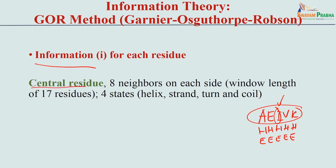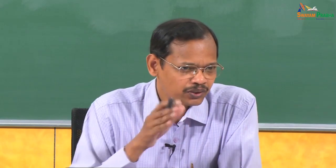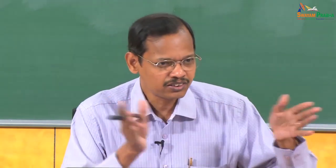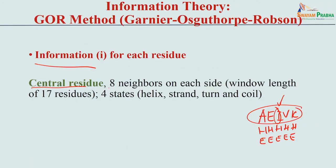Garnier used 8 neighbors on each side of the central residue. The number of neighboring residues depends on window length — you can test window lengths of 3, 5, 7 and optimize for highest performance. With 8 neighbors on each side plus the central residue, the window length is 17 (8 plus 1 plus 8), spanning from j minus 8 to j plus 8.